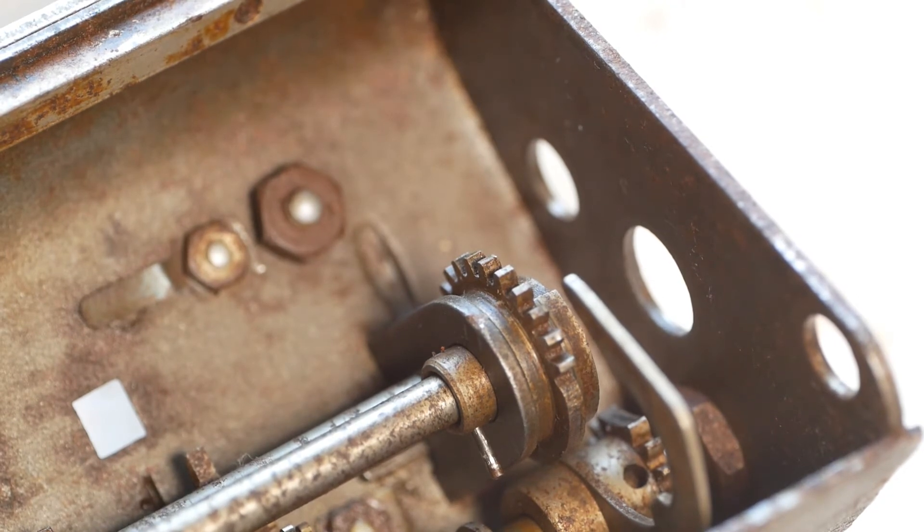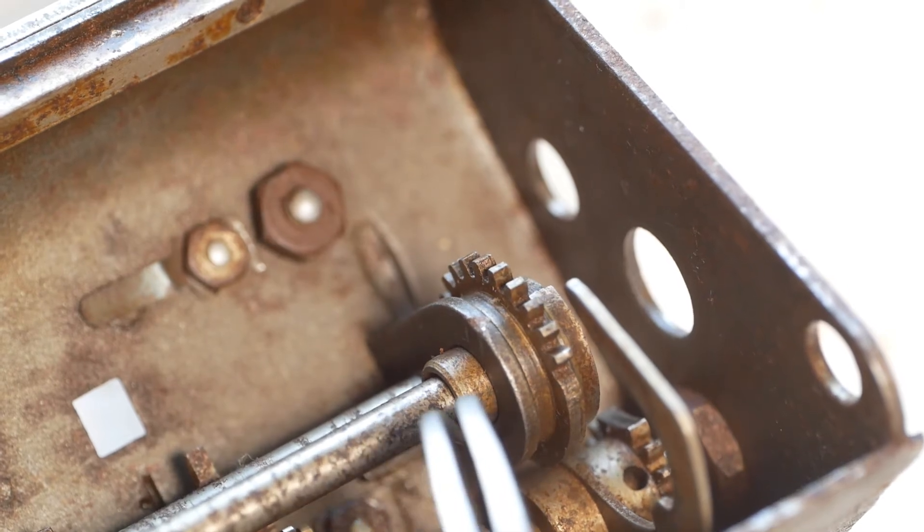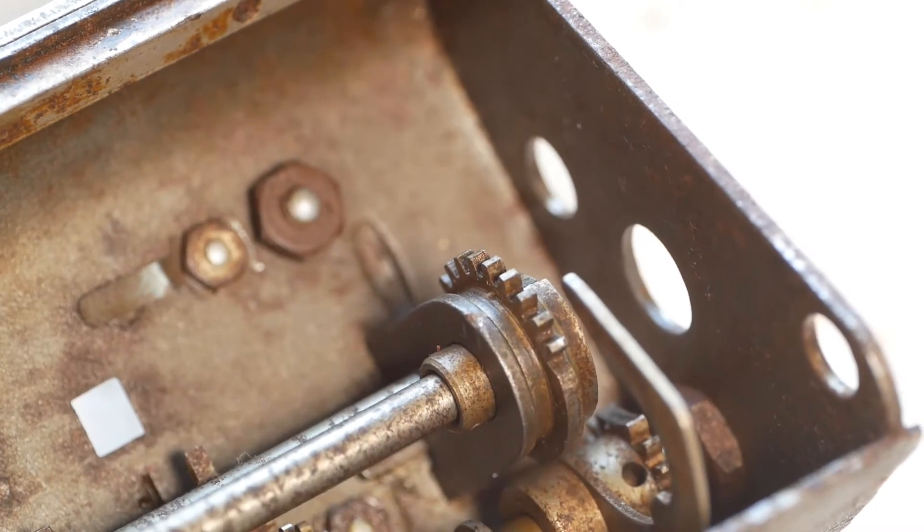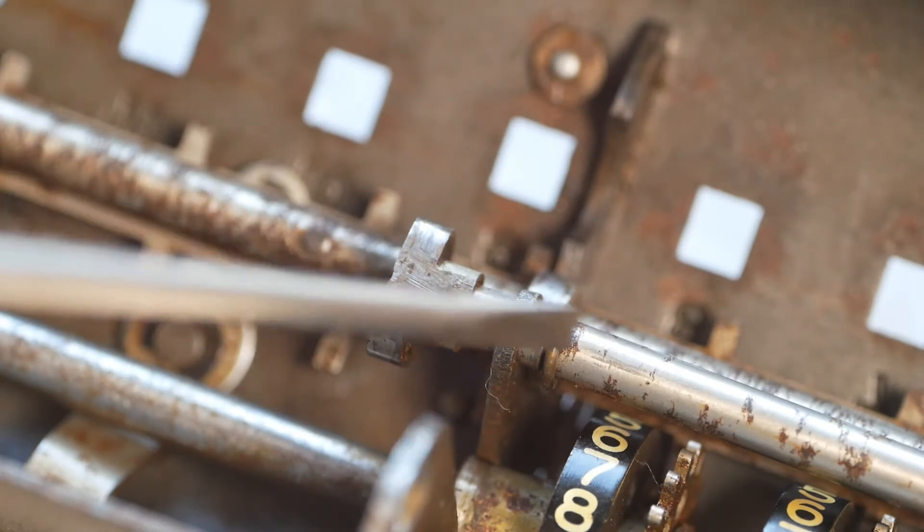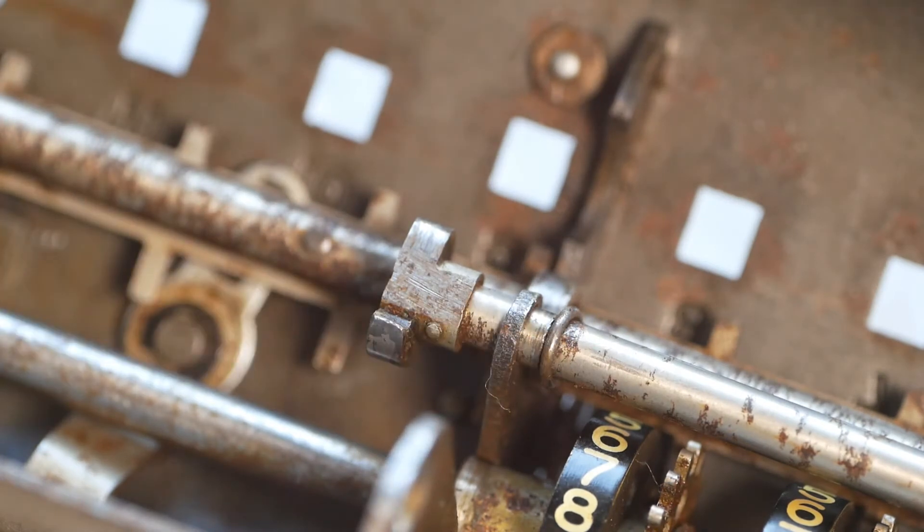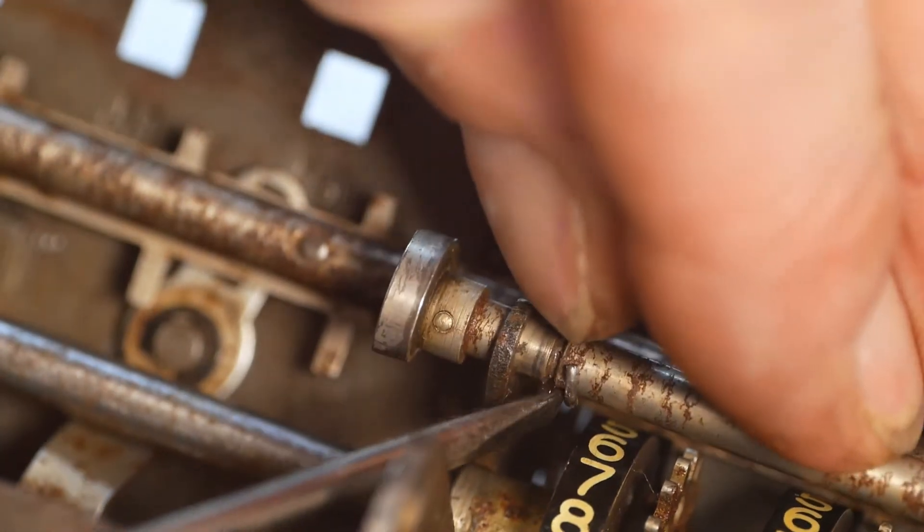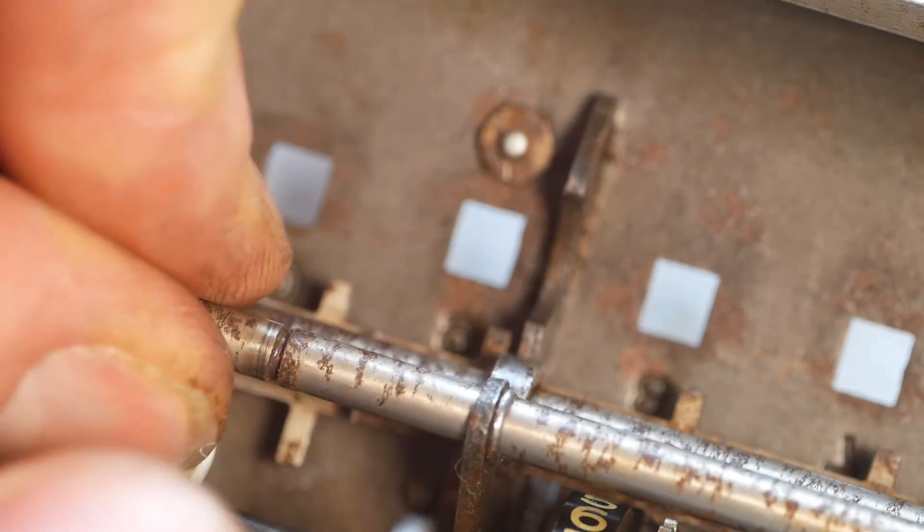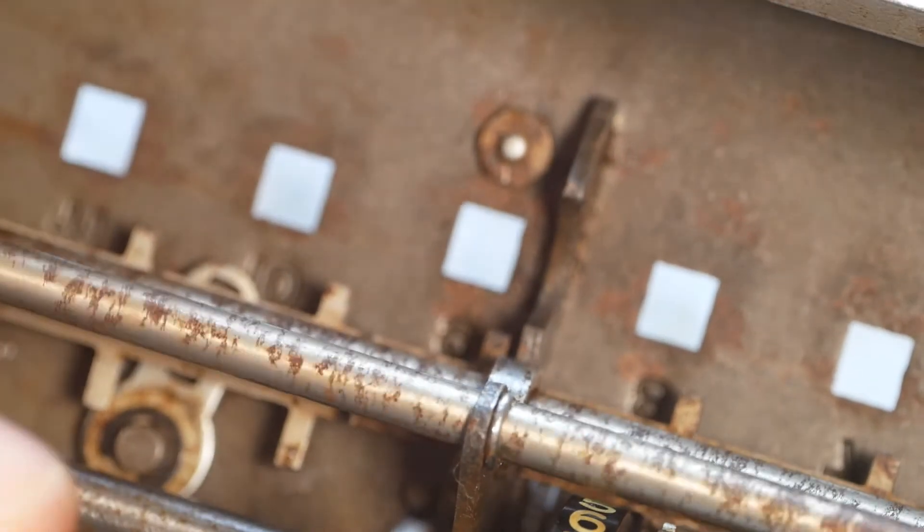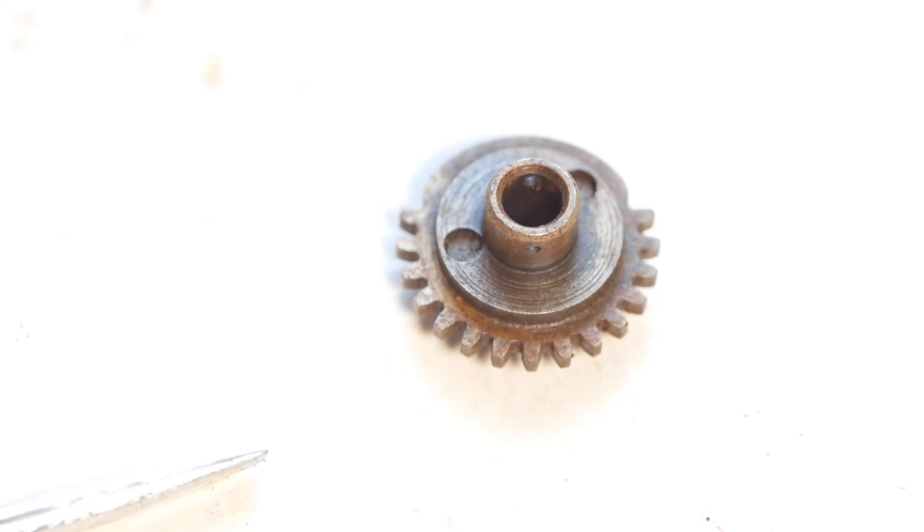That's the taper pin drifted out, and I'll put that safely in a tray. On the other end of the carriage lifting shaft, there's a bent wire lock ring, which needs to be opened out a little to release it from the groove it sits in, and then the lifting shaft can be withdrawn from its bearing hole. And that frees up the second gear, which can now be removed.